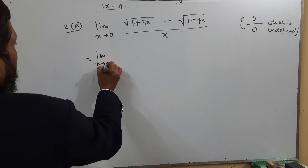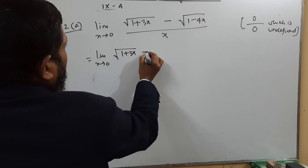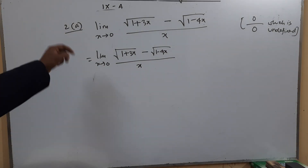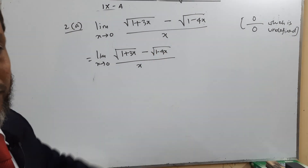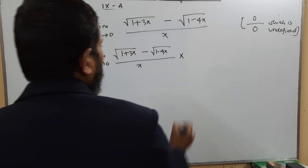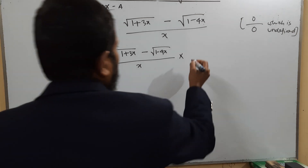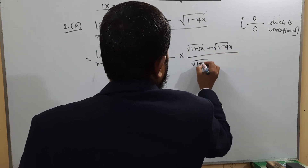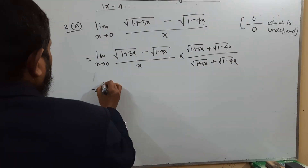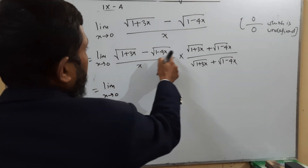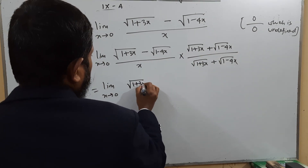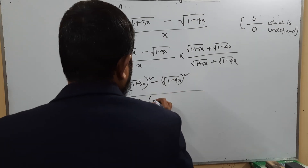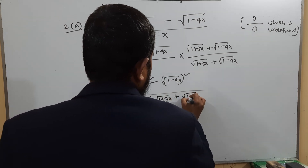So we need to calculate limit x tends to 0 of (√(1 + 3x) − (1 − 4x)) / x. We treat the numerator as a − b form and want to make it a² − b². We multiply numerator and denominator by (√(1 + 3x) + (1 − 4x)). Using the identity (a − b)(a + b) = a² − b², the numerator becomes (1 + 3x) − (1 − 4x)², divided by x·(√(1 + 3x) + (1 − 4x)).